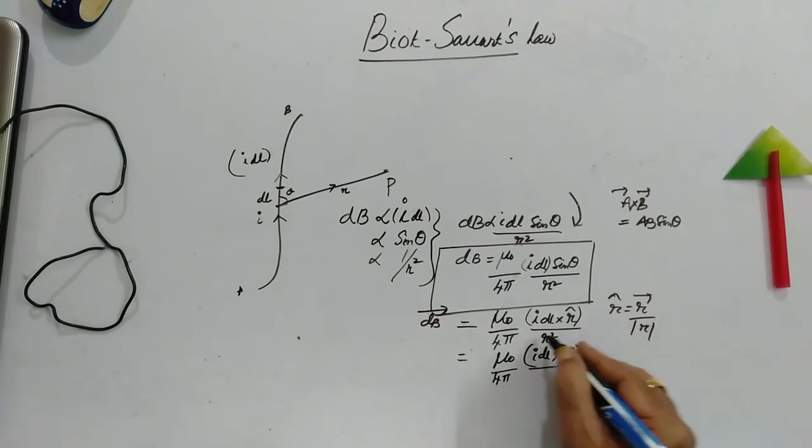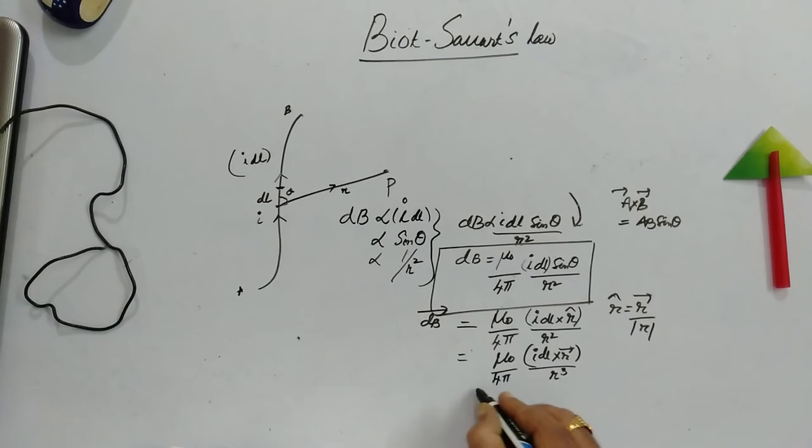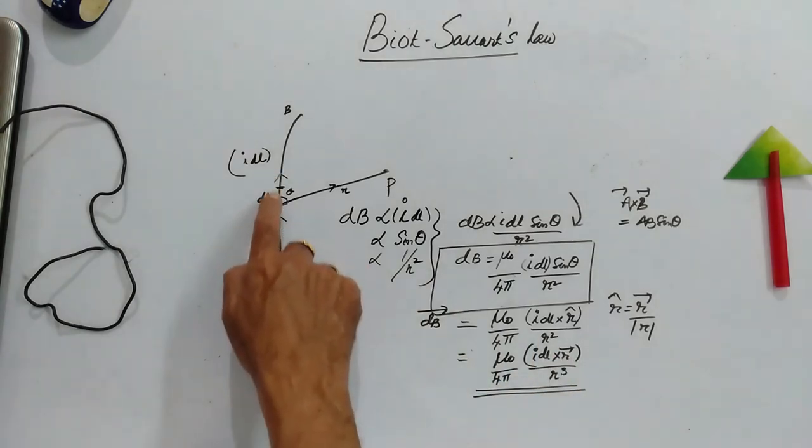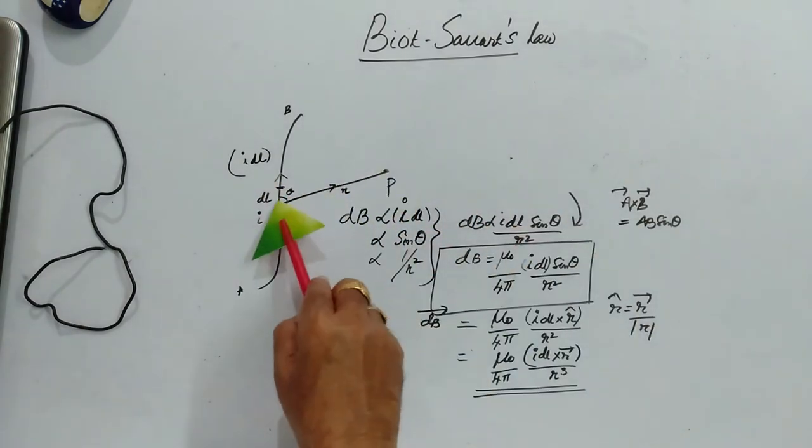Because unit vector can be written as vector by its modulus. So this R will be coming in the denominator. Therefore it becomes R cube. From this equation we can know the direction of magnetic field. This direction of magnetic field should be perpendicular to both the two vectors. That means it should be perpendicular to this as well as perpendicular to this.